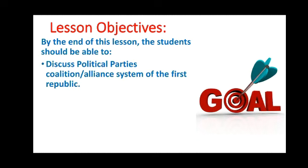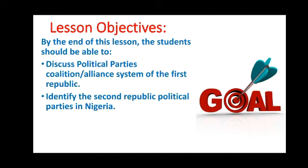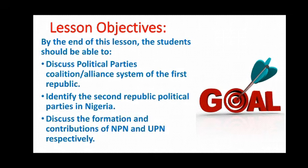By the end of this lesson, you should be able to: first, discuss the political parties and coalition/alliance system of the first Republic; also identify the second Republic political parties in Nigeria; and discuss the formation and contributions of NPN and UPN respectively. Now let's look at the first Republic political parties.